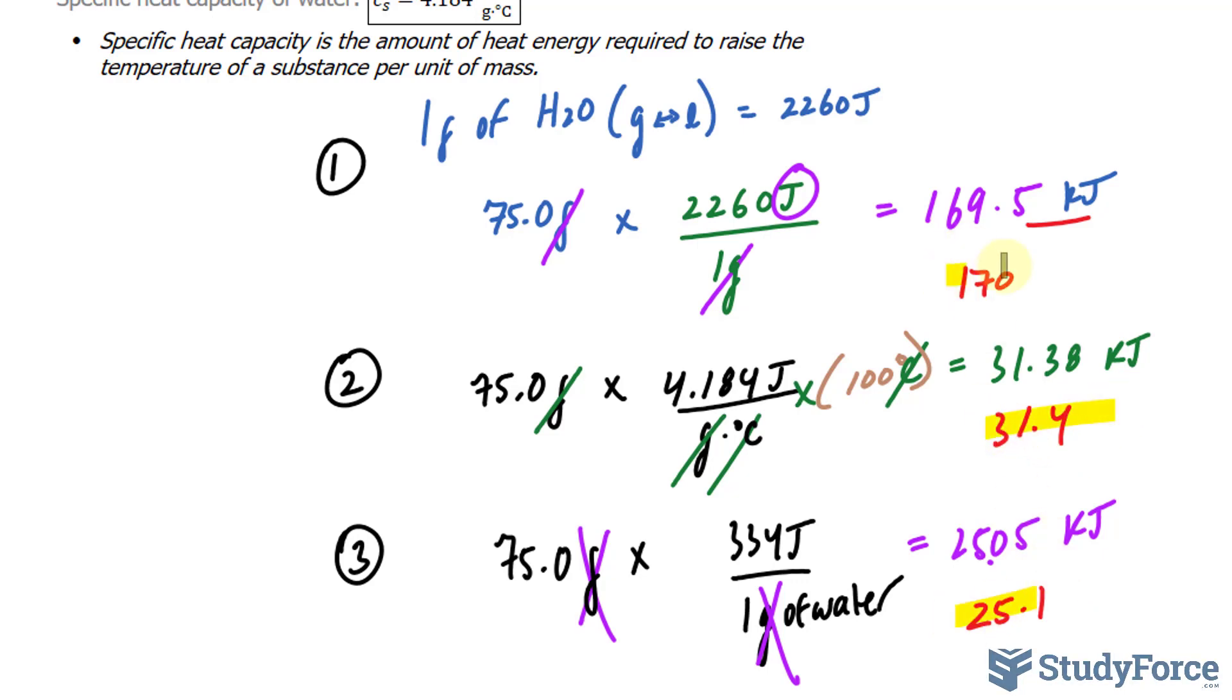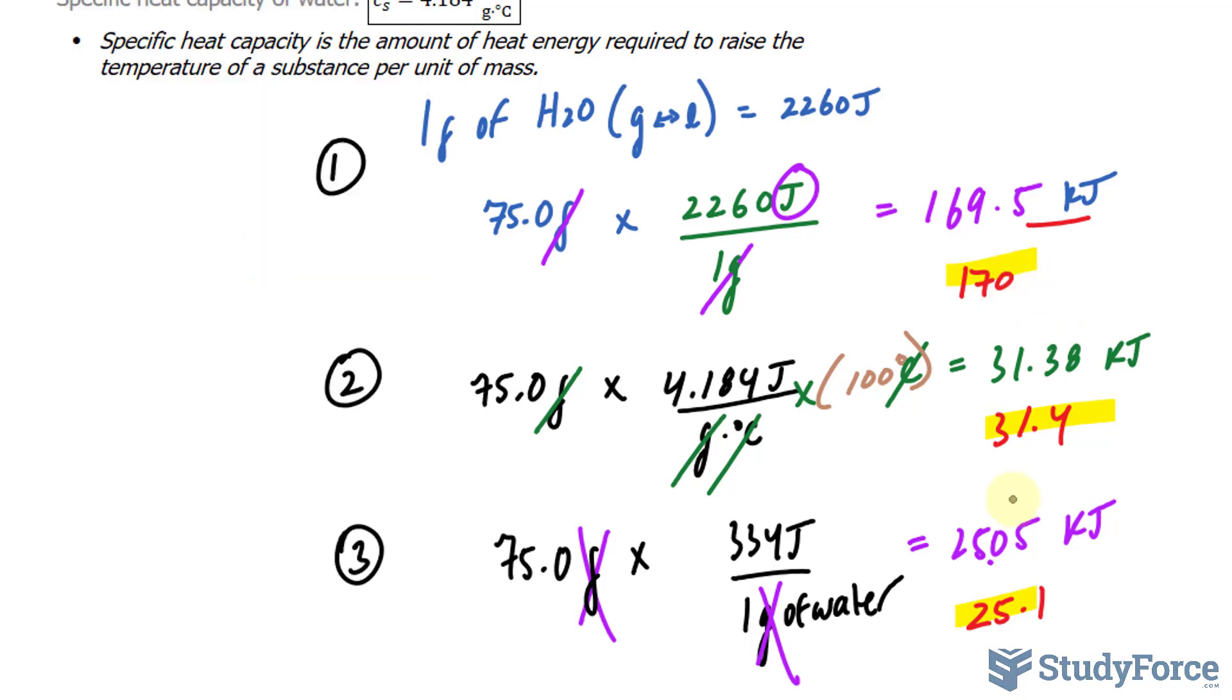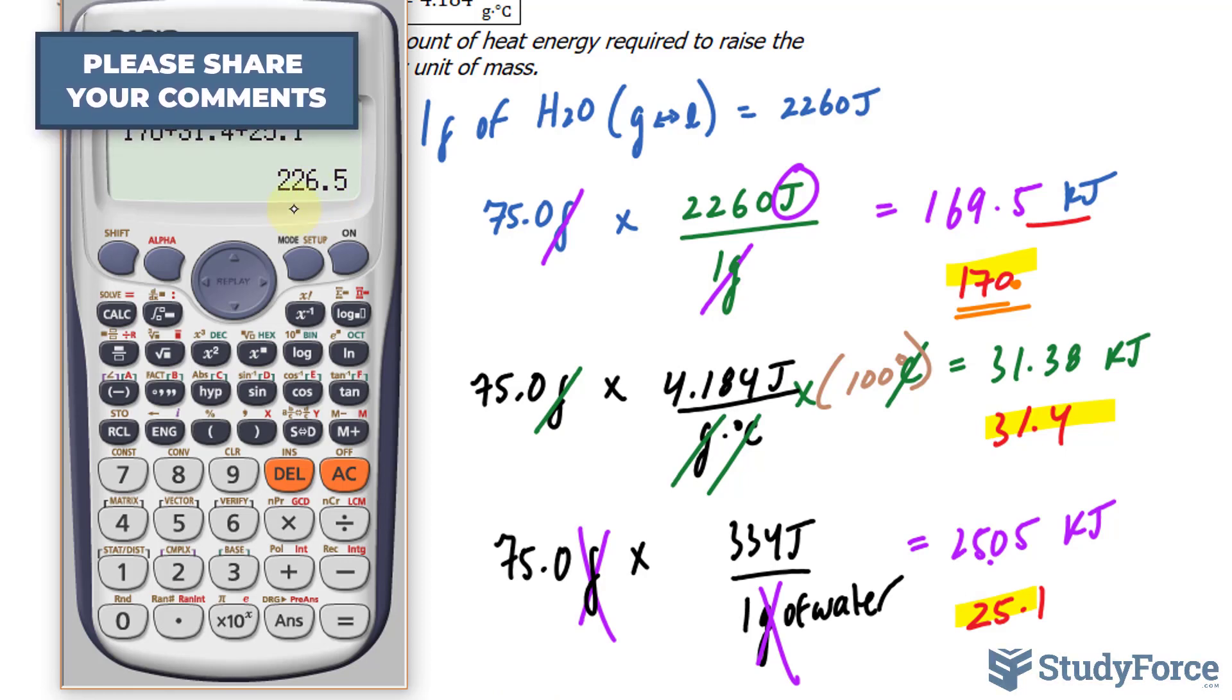If we add these up, we get 170 plus 31.4 plus 25.1. And when it comes to adding, what dictates the number after the decimal place is the number with the least numbers of digits after the decimal place, which happens to be this one. It has no numbers after the decimal place, so neither should this. We should end up with 226.5.